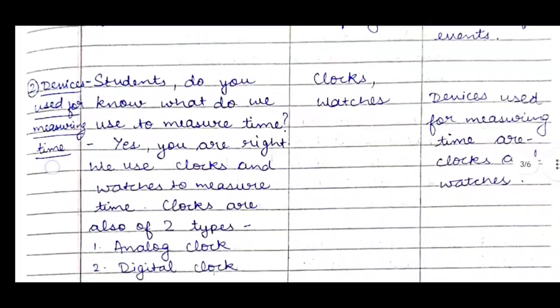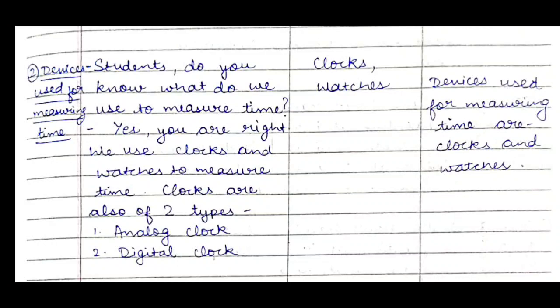The second teaching point is devices used for measuring time. The teacher will ask students: do you know what we use to measure time? Students will say clocks and watches. The teacher will confirm: yes, we use clocks and watches to measure time, and clocks are of two types — analog clock and digital clock.